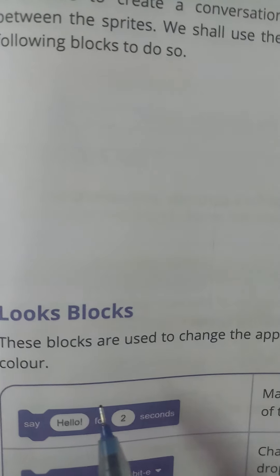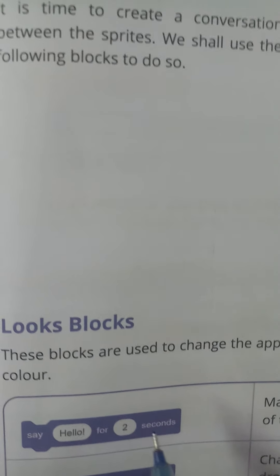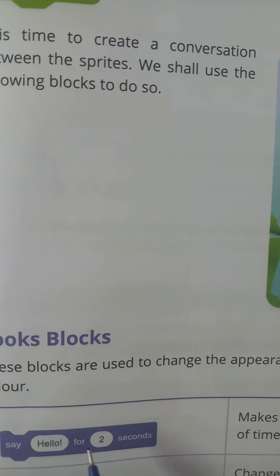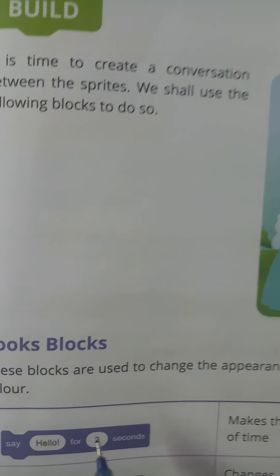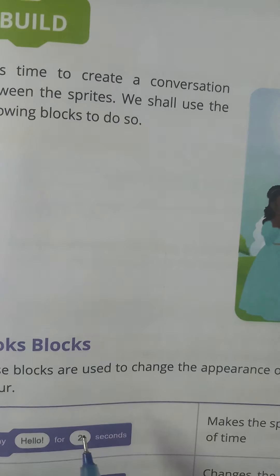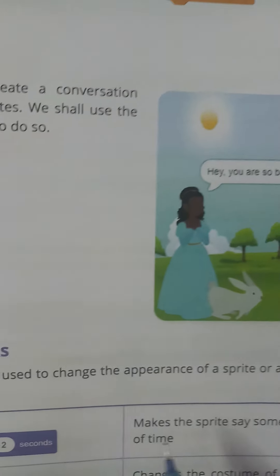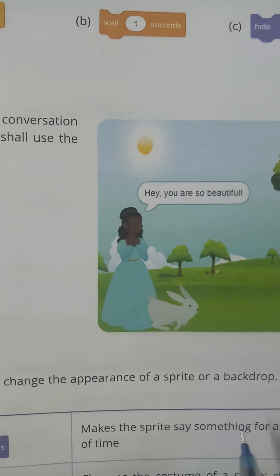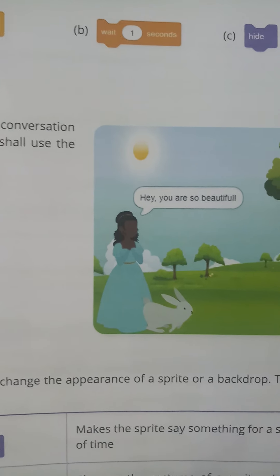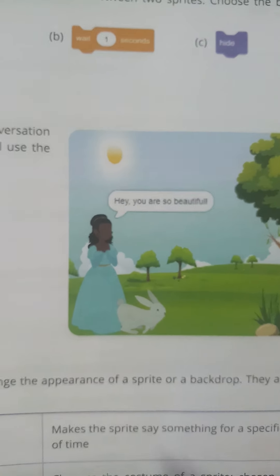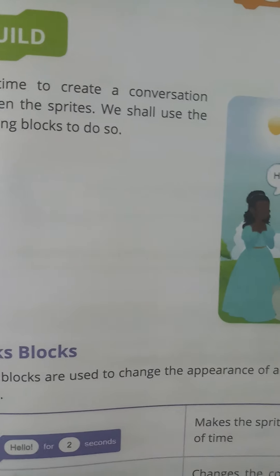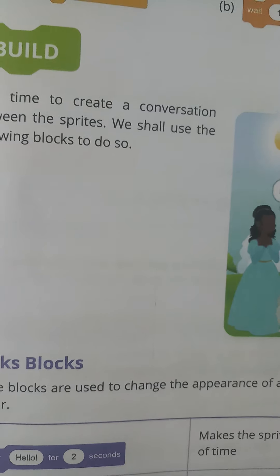The first block is 'Say Hello for 2 Seconds.' Here you can give a message such as hi, hello, good morning, good evening, hello everyone — for a particular time. You can also mention the time. It makes the sprite say something for a specified period of time.